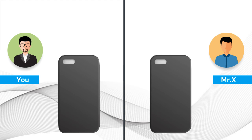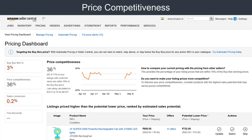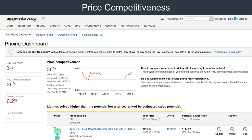Let's understand this with an example. Suppose Mr. X and you happen to sell the same mobile cover, and Mr. X wins the buy box selling at rupees 400 while you are selling at rupees 405. This means that you're losing out on the buy box by just rupees 5.